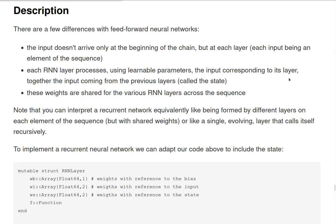And for both of these inputs, the computations will be made using some parameters that we want to learn. And these parameters, these weights, are shared for the various layers of the RNN across the sequence. So we can interpret this in two different ways. The first one is that we have one single RNN layer and this is called itself recursively with the different elements of the sequence. Or we can think that at each element we have different layers but with shared weights.